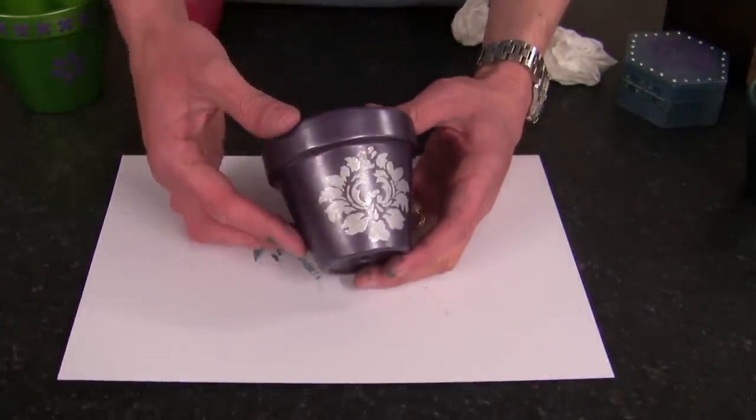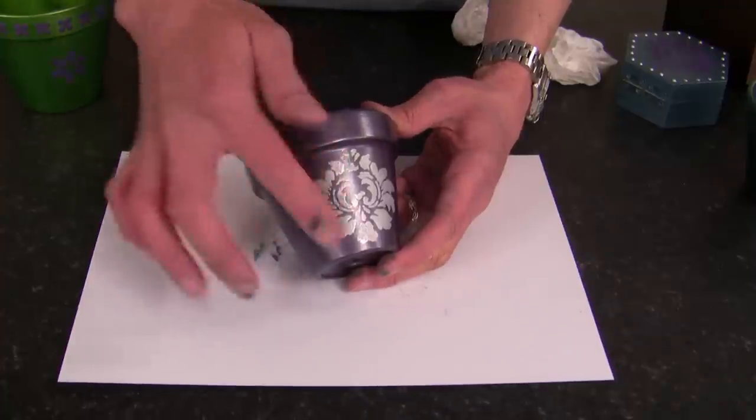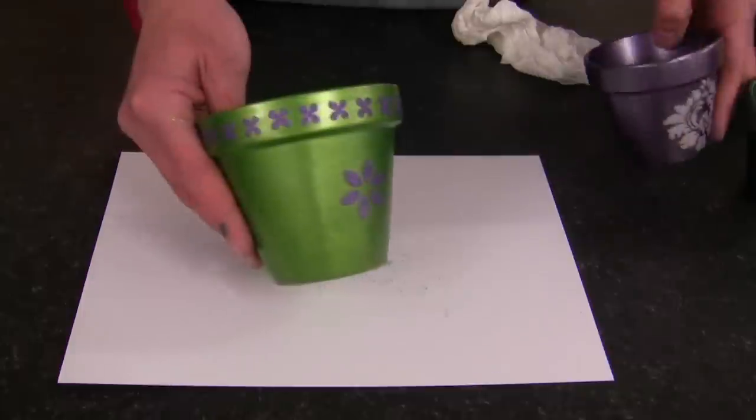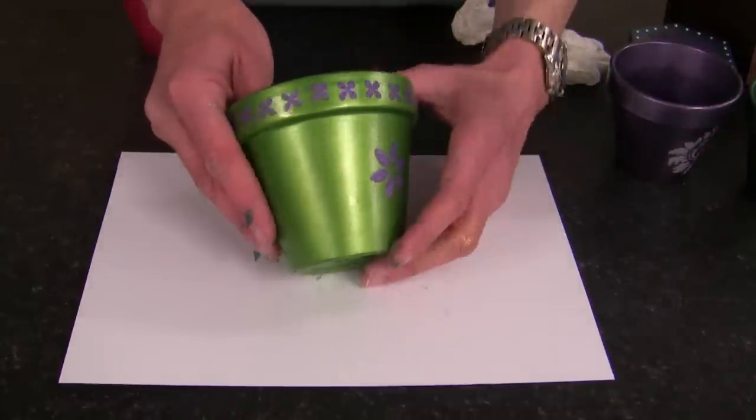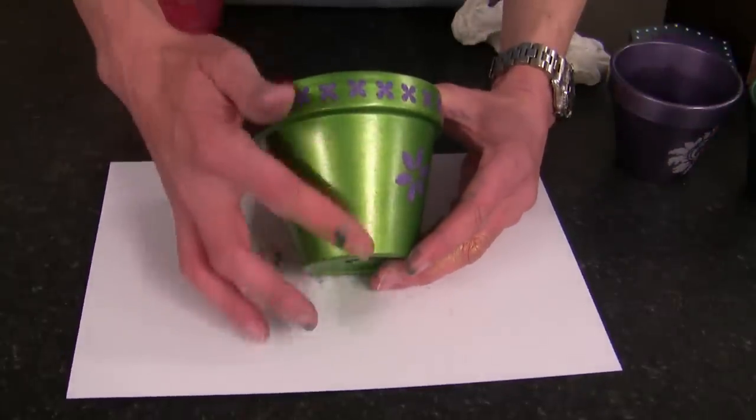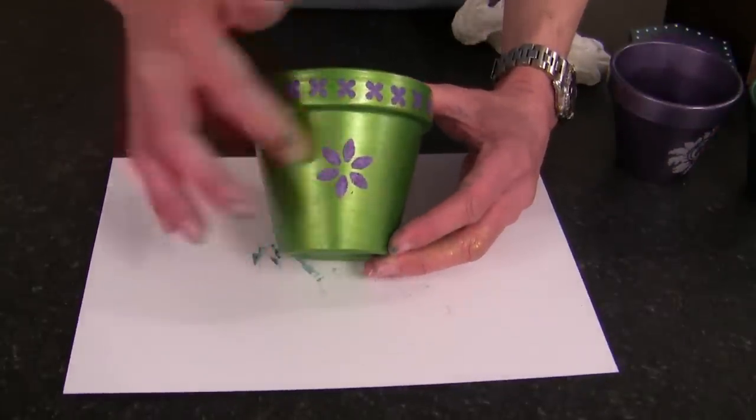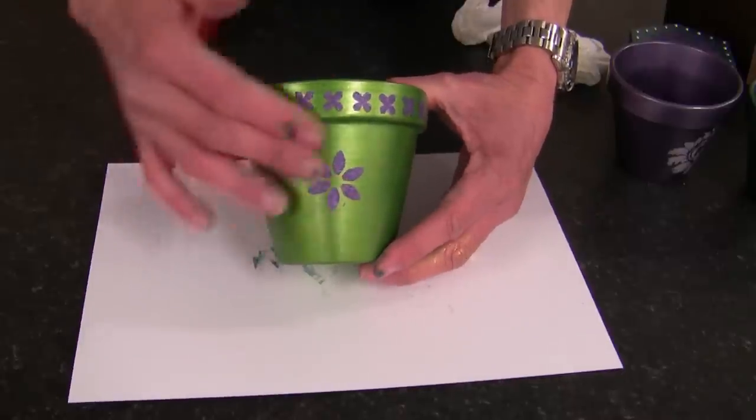And you can see what we've done here: we've just added a stencil and gone through that with silver Buffet. We've then used the green and gold Buffet to produce this beautiful color here and then gone over the top with a stencil.